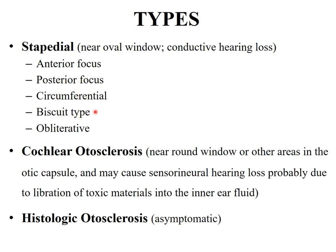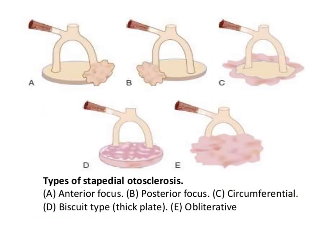This will be the biscuit type, and sometimes it may completely obliterate the oval window, causing the obliterative type. Cochlear otosclerosis occurs near the round window or other areas in the otic capsule and may lead to sensorineural hearing loss, probably due to liberation of toxic materials into the inner ear fluid. The histological variety is usually asymptomatic. This picture shows the different types of stapedial otosclerosis: anterior focus, posterior focus, circumferential biscuit type — in which the annular ligament is spared — and obliterative type.